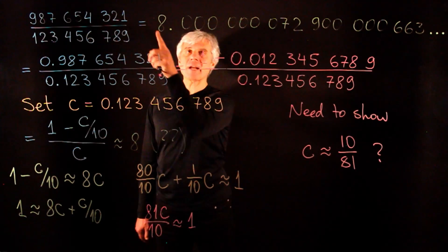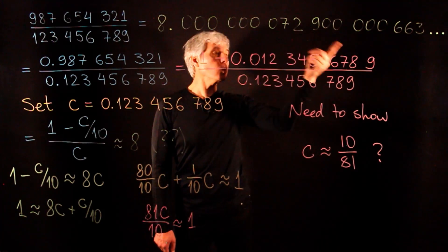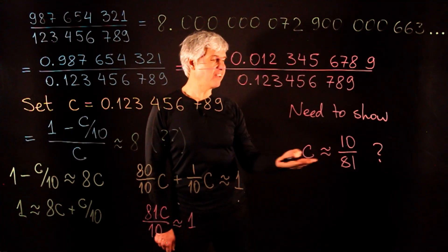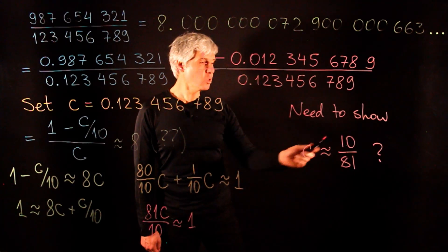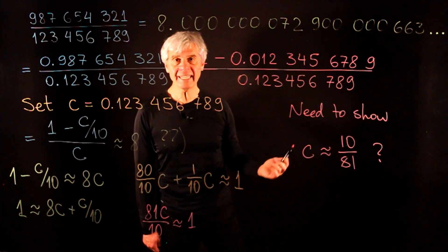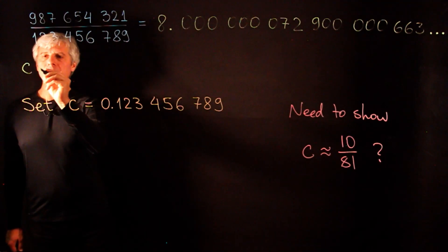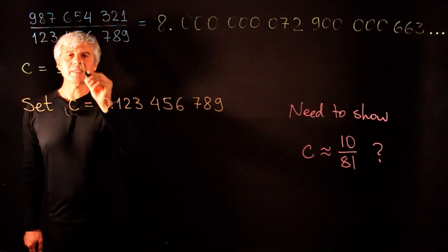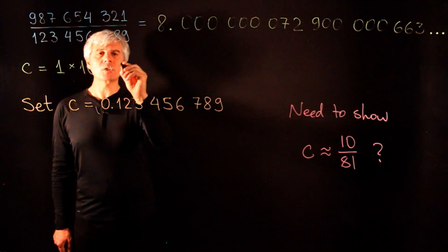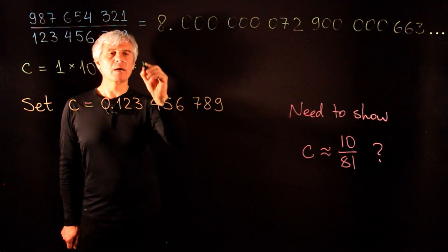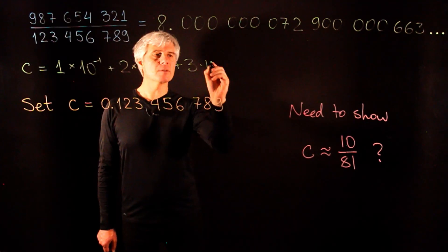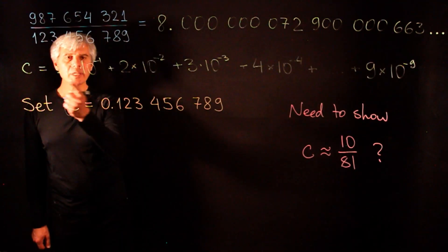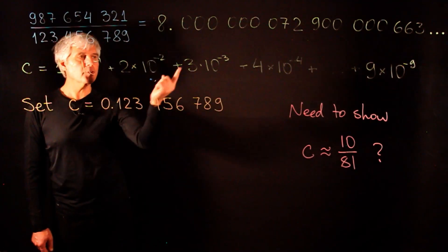But obviously this fraction is not 8, but close to it. So we expect that the value of c is very close to this fraction. So if c is not 10 over 81, what is it? Let us write this number in the following way. It's 1 times 1 tenth plus 2 times 1 hundredth plus 3 times 10 to the negative 3. How can we make this number more perfect and complete?